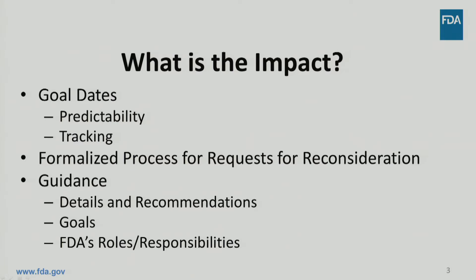The guidance clearly explains considerations that an applicant should take prior to submitting a request for reconsideration. It addresses both matters that are appropriate to address through this process and matters that are not appropriate. It also discusses how FDA will apply GDUFA-2 goals for reconsideration requests to ANDAs, prior approval supplements, and their associated amendments. Lastly, the guidance outlines the proper procedures for submitting these requests and discusses FDA's process for reviewing and responding to a request for reconsideration.